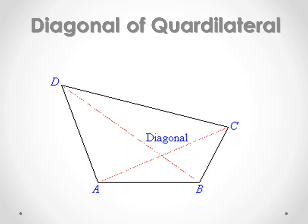Now, diagonals of a quadrilateral. There are two diagonals of a quadrilateral: AC and BD. These are the diagonals of the quadrilateral.